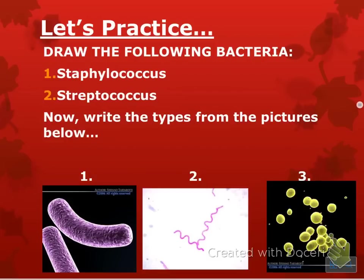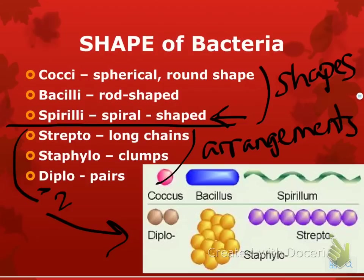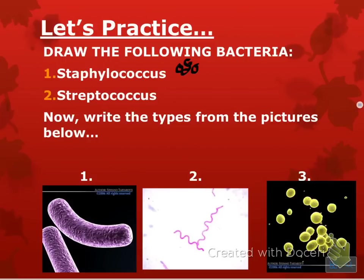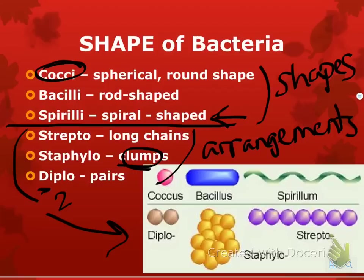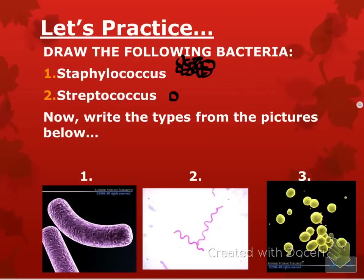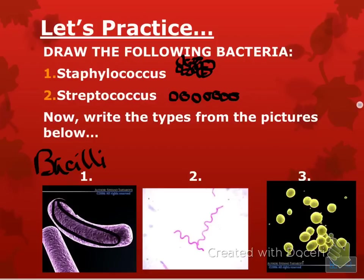Let's practice drawing these. Staphylococcus: staphylo is a clump, coccus is spherical — so this is just a bunch of little dots in a clump. You will have to do this on a quiz. Streptococcus: strepto is a long chain, coccus is spherical — so this is a chain of spherical shapes. For identifying from pictures: rod-shaped is bacilli, spiral is spirilli, and spherical is cocci.